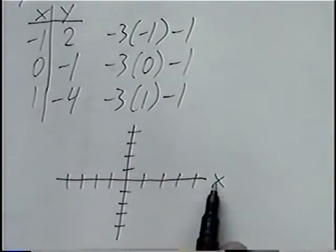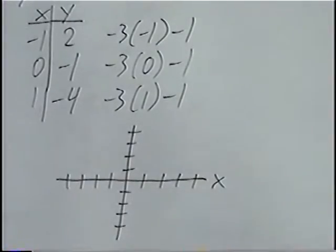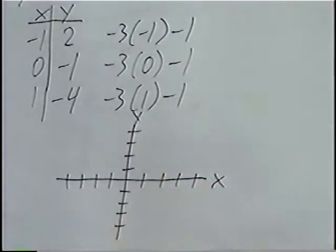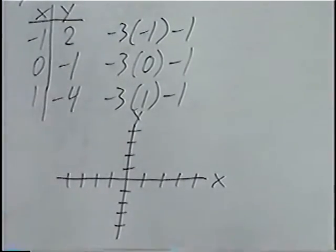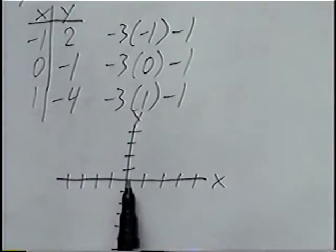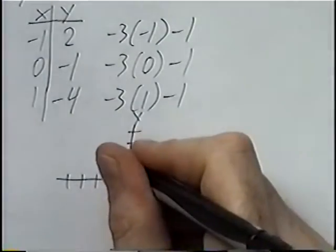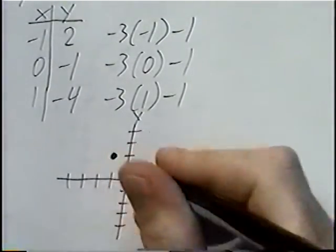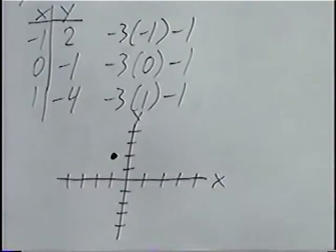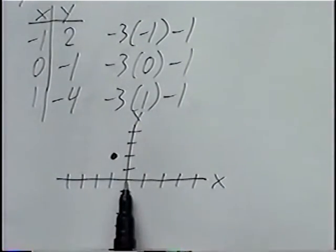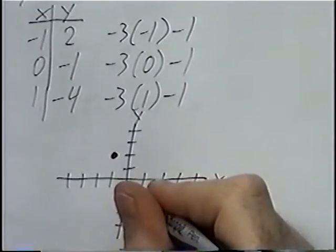The x-axis goes horizontal, left and right, and the y-axis is vertical, going up and down. The first point is negative one, two: x is negative one, y is positive two. The second point is zero, negative one: zero is in the middle of the graph, and negative one means one spot down.